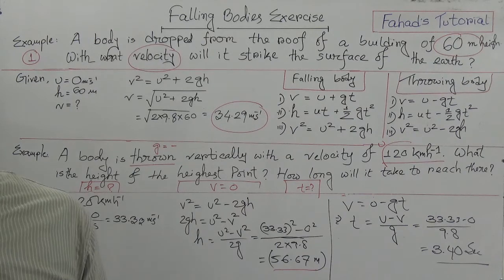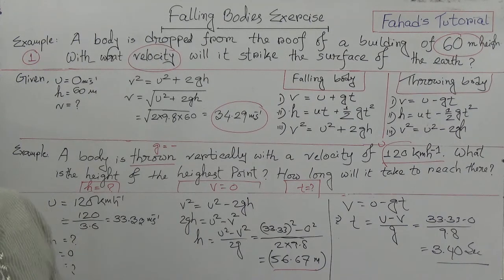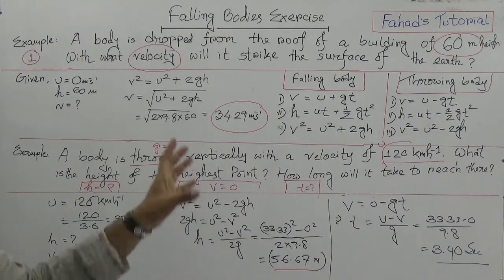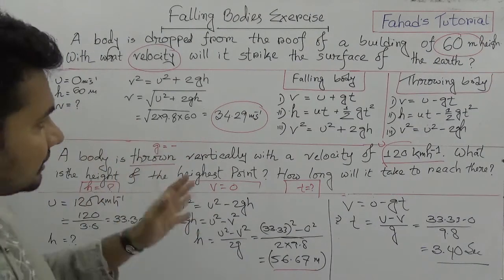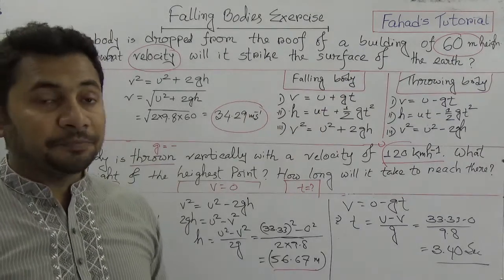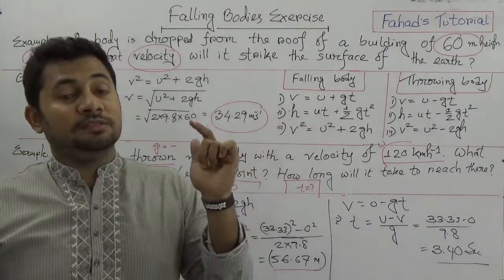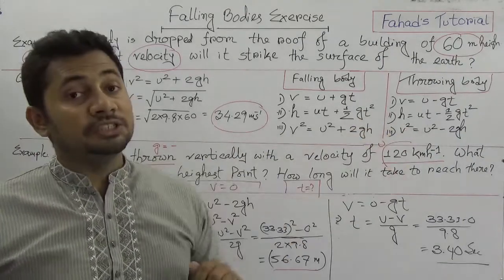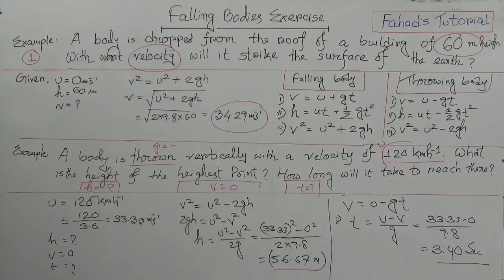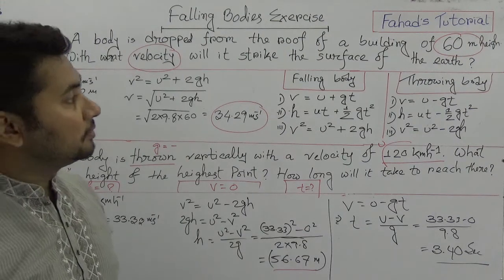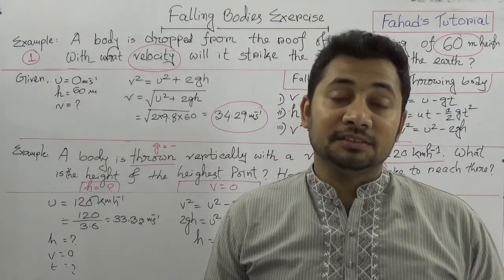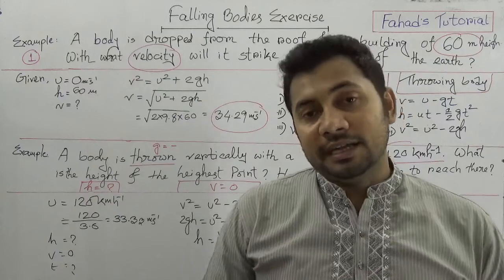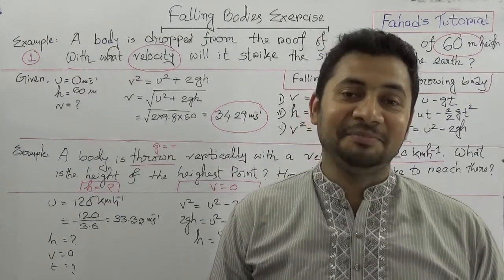These questions are at a primary level of physics problem solving. To summarize: for falling bodies, G is positive, and for throwing bodies, G is negative. Based on that principle we can solve these problems. See you in the next class, and do let me know your recommendations, feedback, and what you want to study at the next level. Take care, stay well, stay blessed. Bye.